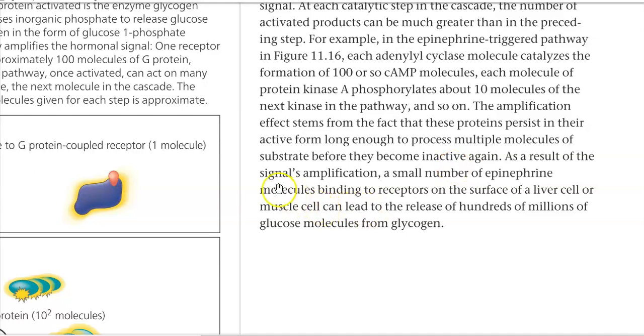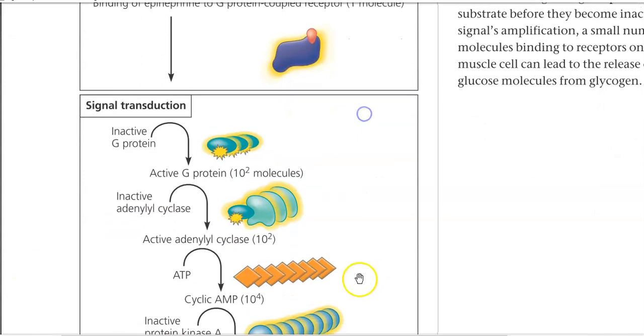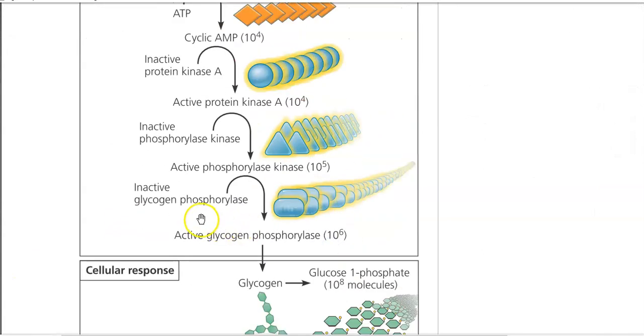As a result, in the signal amplification process, a small number of epinephrine molecules that binds on the receptors present in the cell surface of a liver cell or a muscle cell can able to release 100 or millions of glucose molecule there from the glycogen with the help of glycogen phosphorylase enzyme.